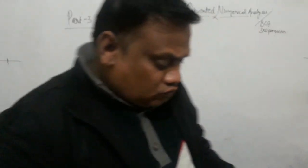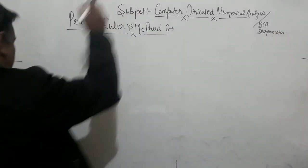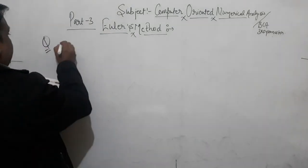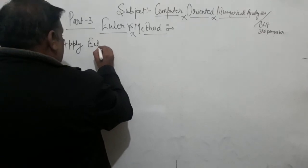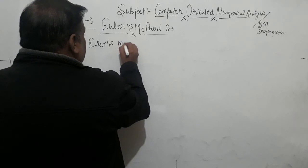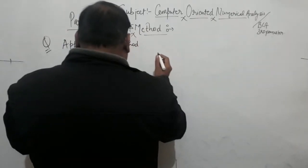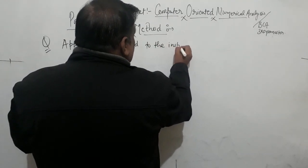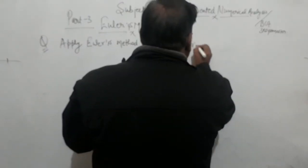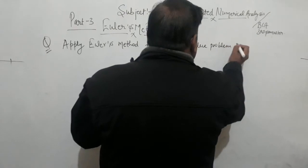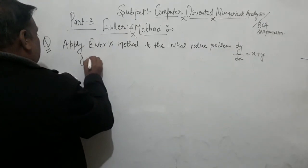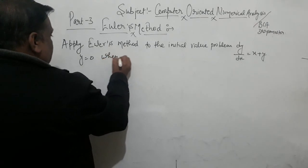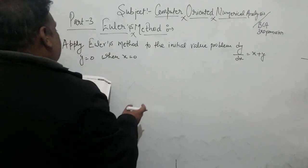So let's look at the question. Our question is: apply Euler's method to the initial value problem. dy/dx is equal to x plus y, and y is equal to 0 when x is equal to 0.